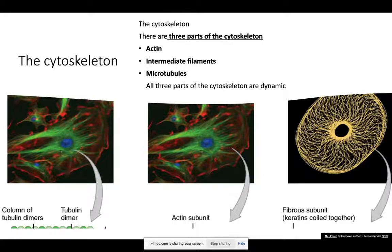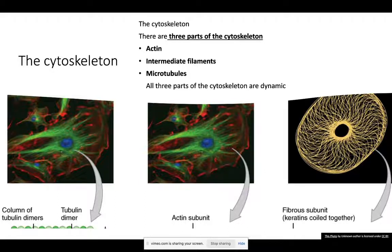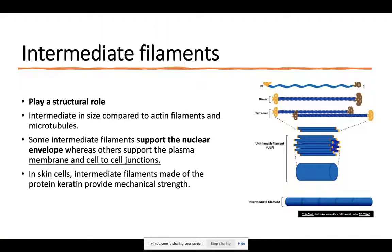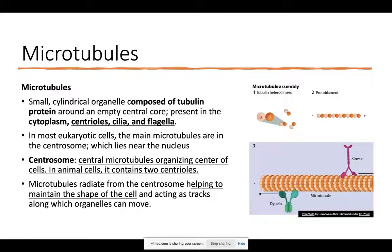Briefly, the cytoskeleton has three components: actin, intermediate filaments, and microtubules. Microtubules are responsible for movement. Intermediate filaments are responsible for maintaining structural integrity of the cell and support the plasma membrane and cell-to-cell junctions. Microtubules are small cylindrical organelles composed of tubulin protein around an empty central core. The centrosome is the central microtubule-organizing center of the cell and in animals contains two centrioles.